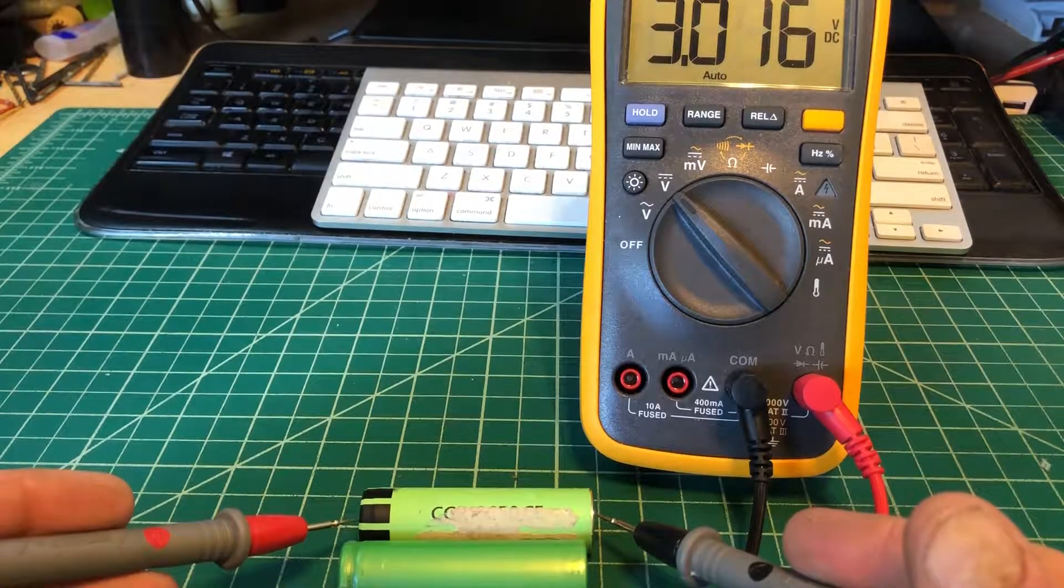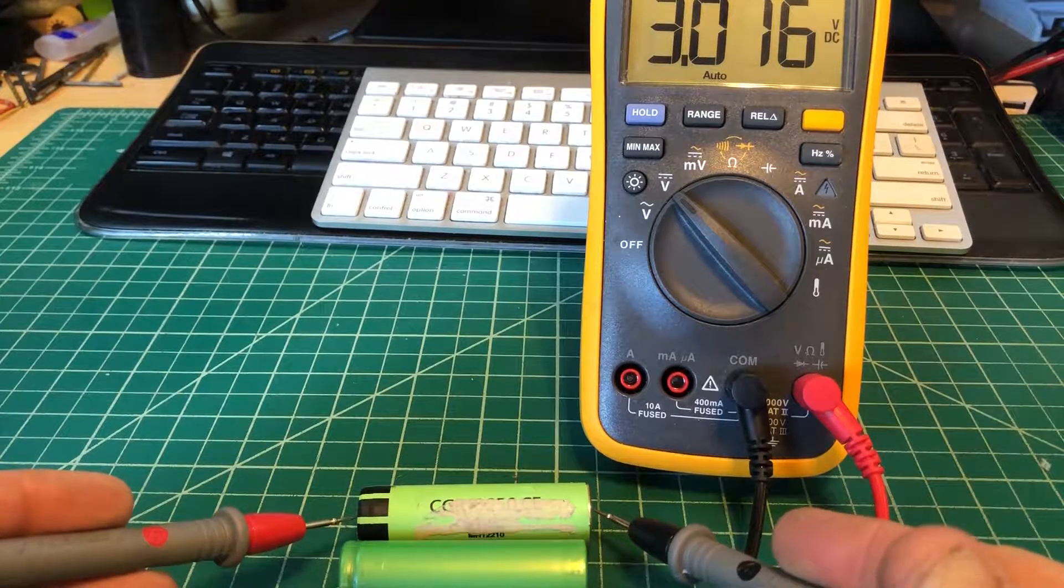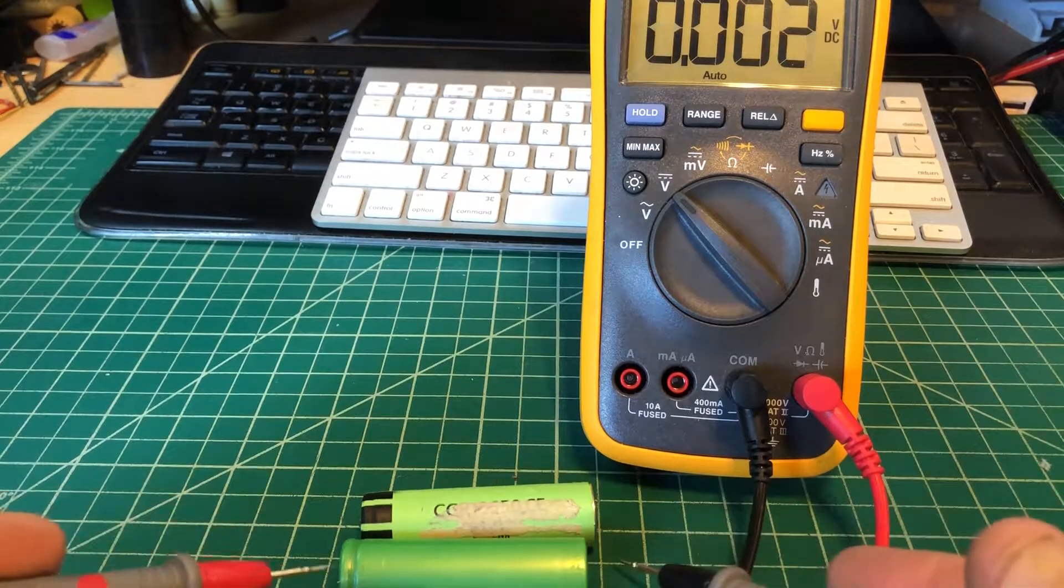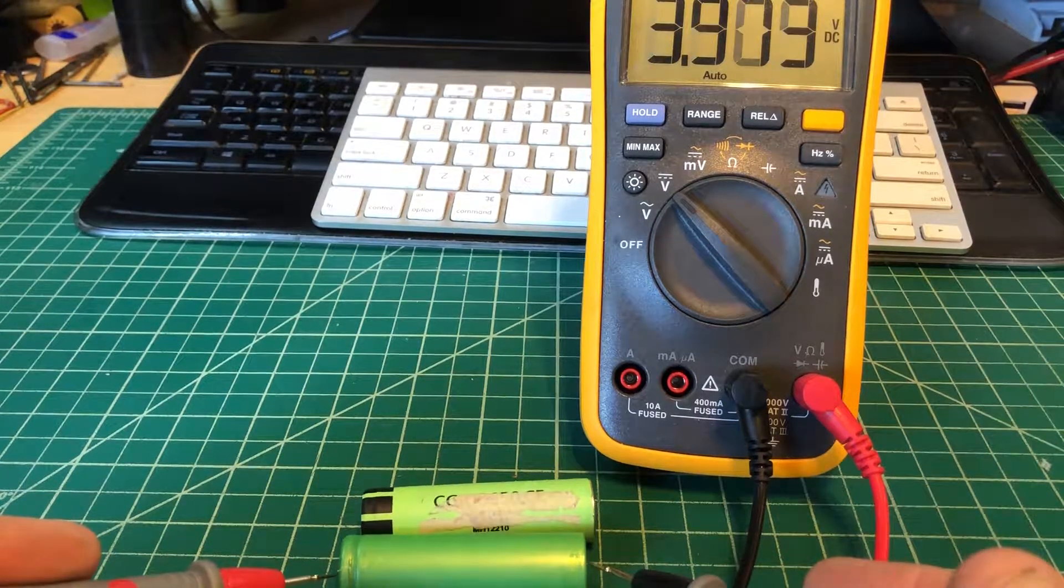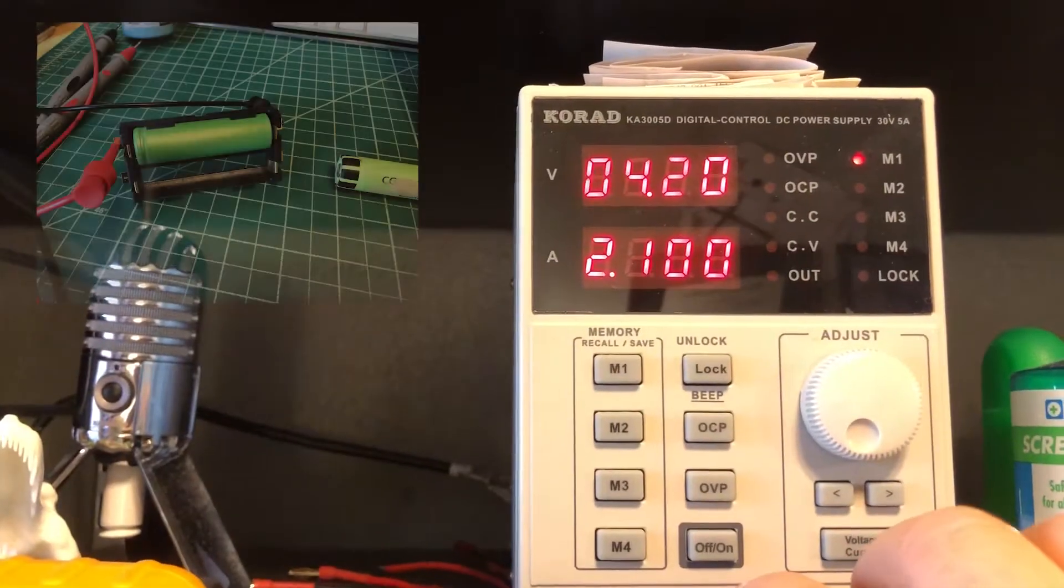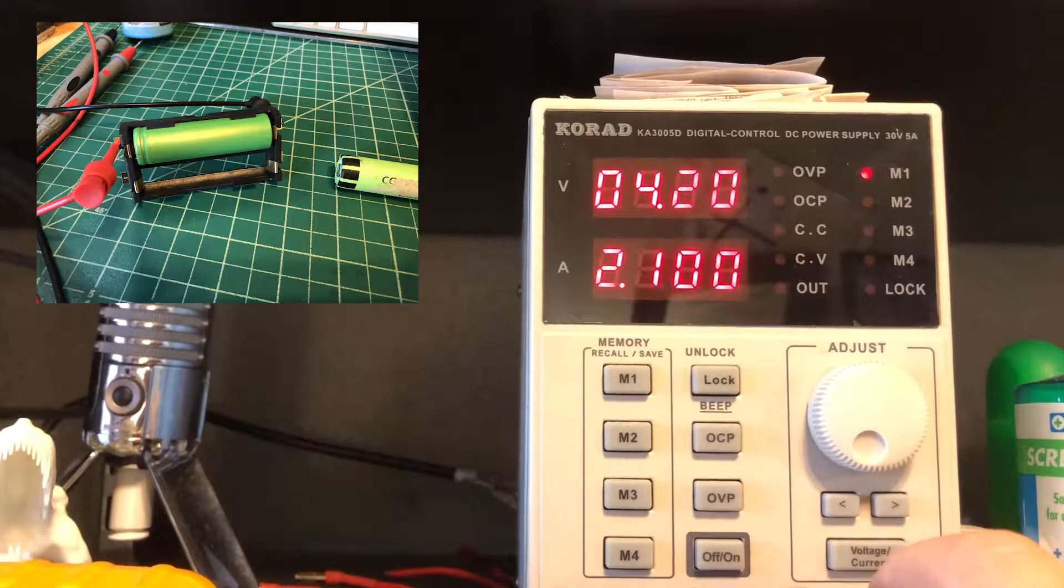These batteries vary in different voltages. This one, as you can see, is at just above three volts. This one has more charge on it—we're at 3.97 volts.